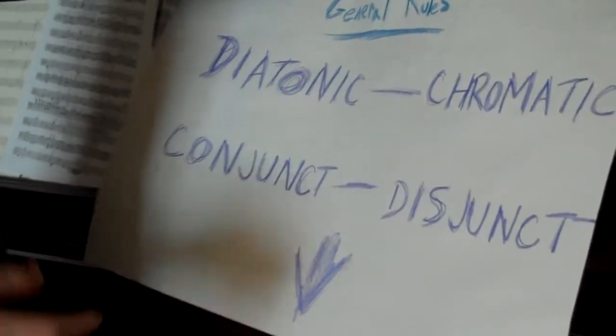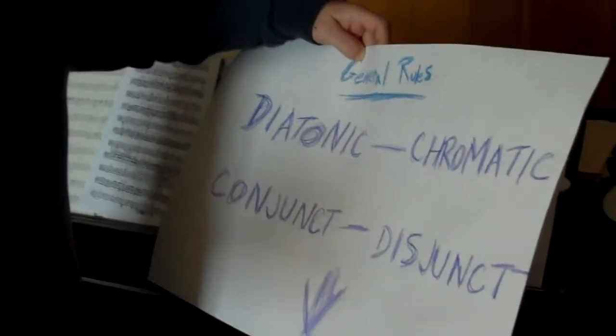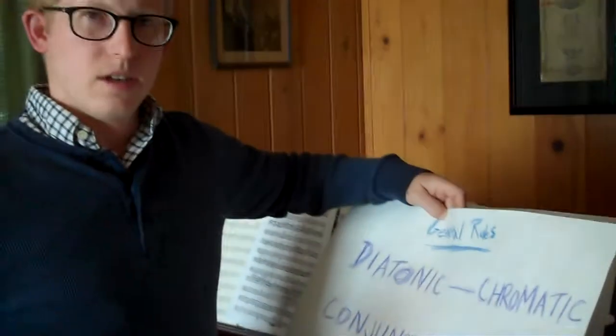Conjunct movement is movement along steps along the prevailing line of the scale. So as a very simple example in the scale of E major, it would be F sharp to G, or G sharp, back to F sharp, down to E, then to D sharp. Those are steps along the E scale.